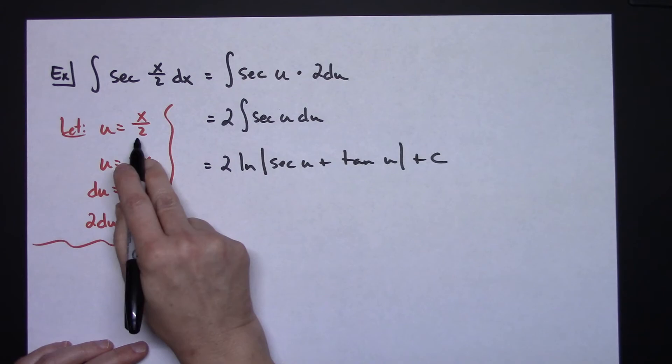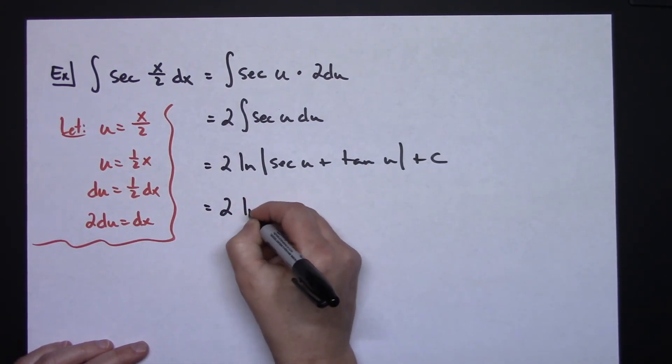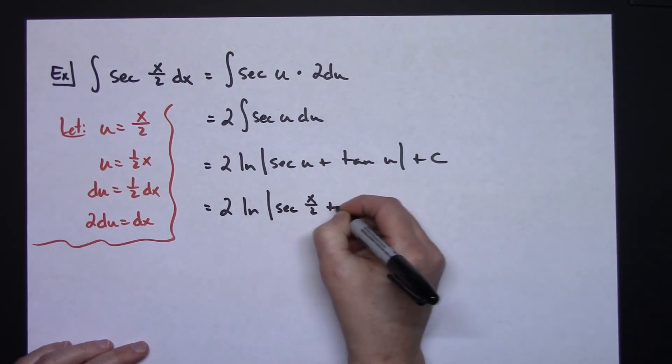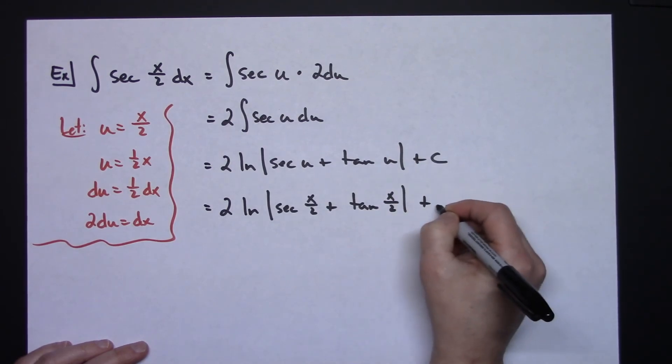I'm going to take those u and replace them with x over 2. So 2 natural log secant x over 2 plus tangent x over 2 plus c.